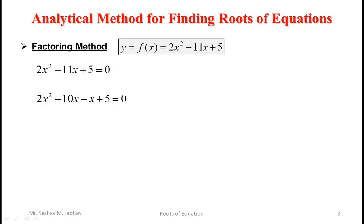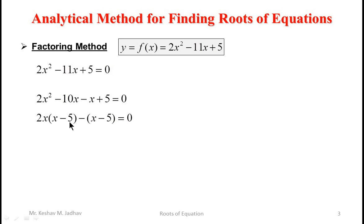From the first two terms we can take 2x common, giving us 2x in bracket (x minus 5). Then taking minus sign common from the remaining terms gives us minus (x minus 5). So x minus 5 is common and we can factor it out, leaving (x minus 5)(2x minus 1) equals 0.